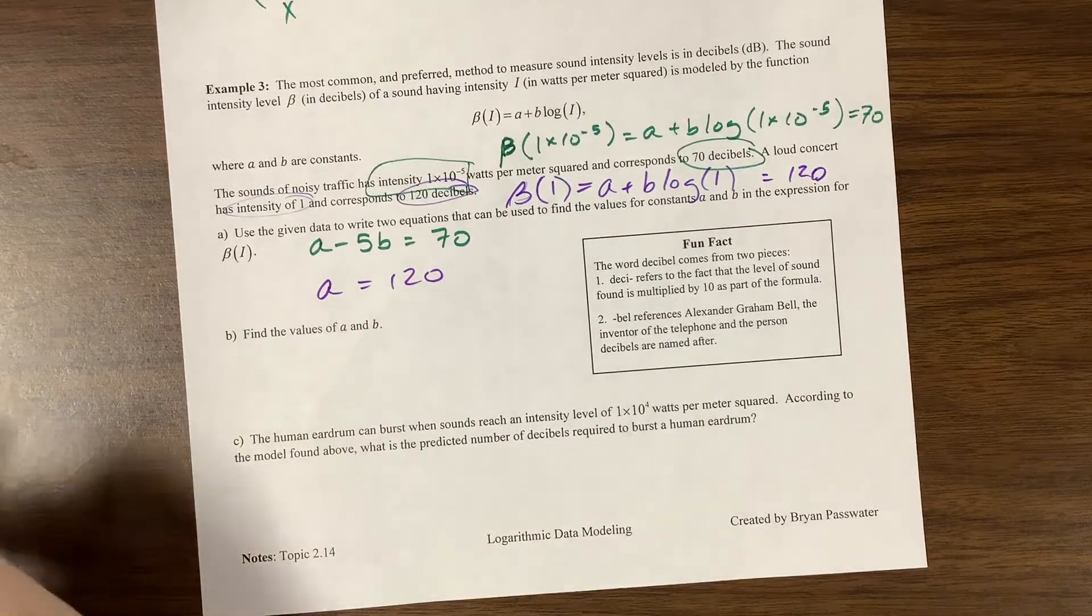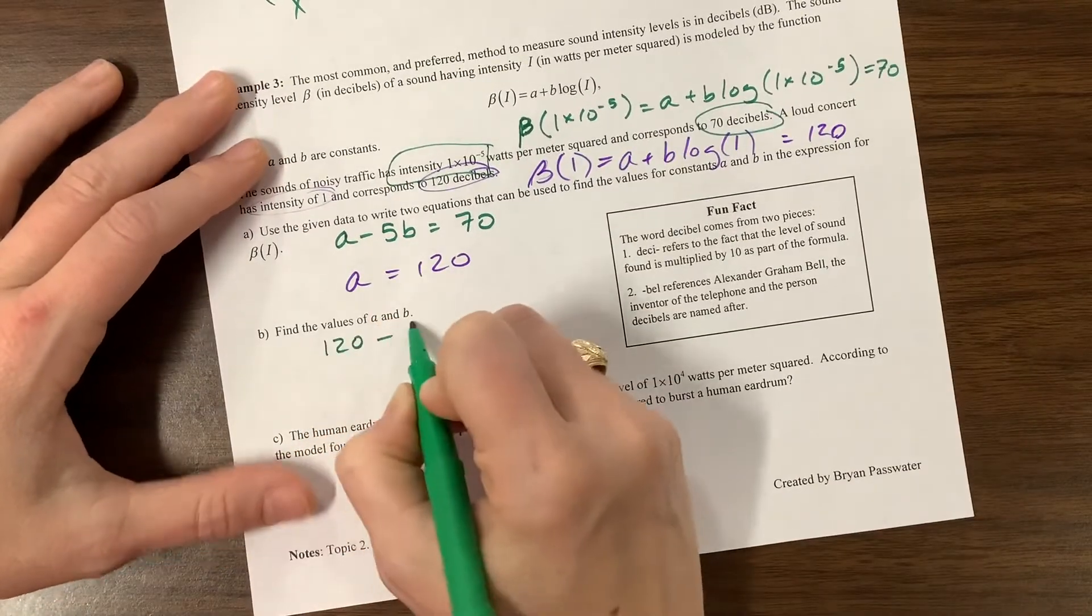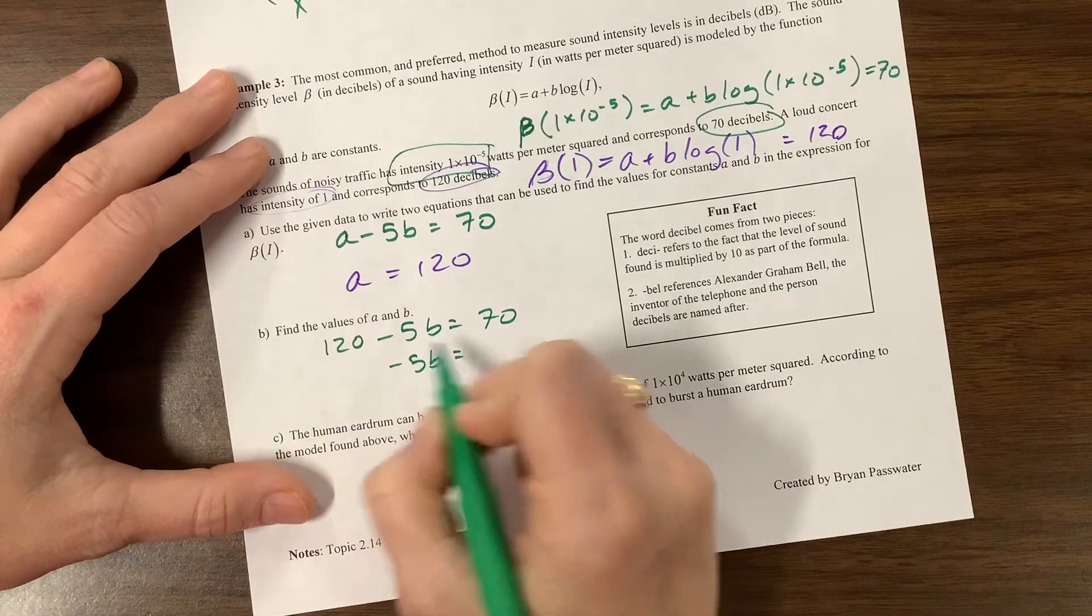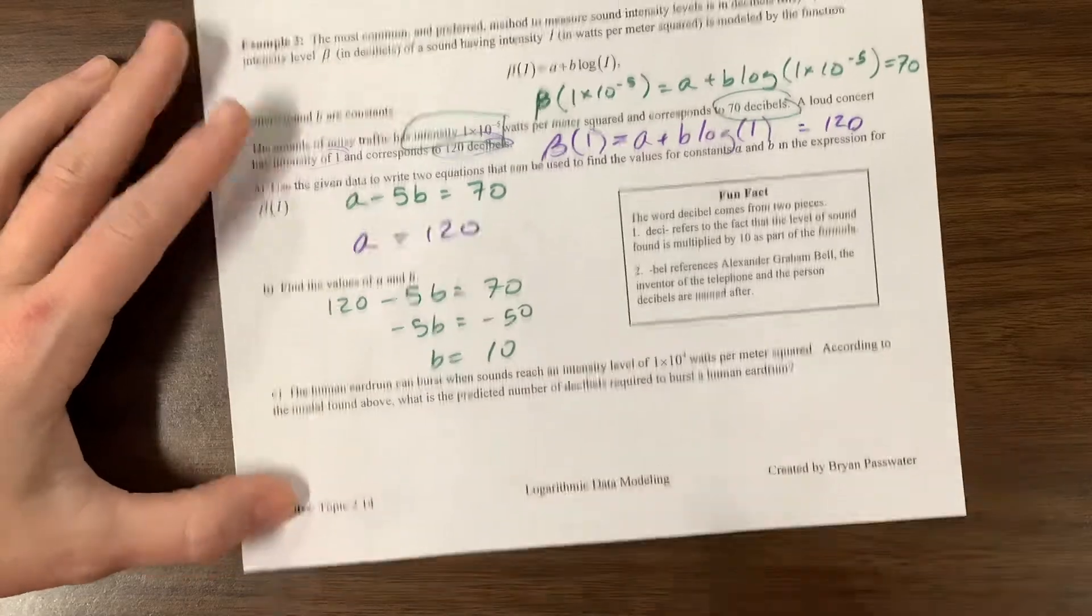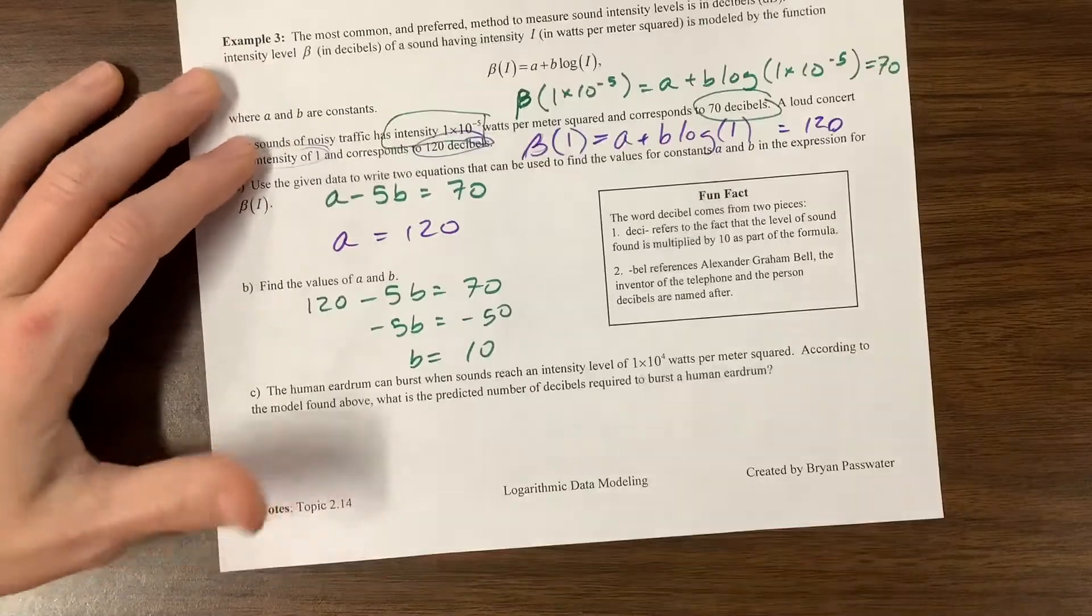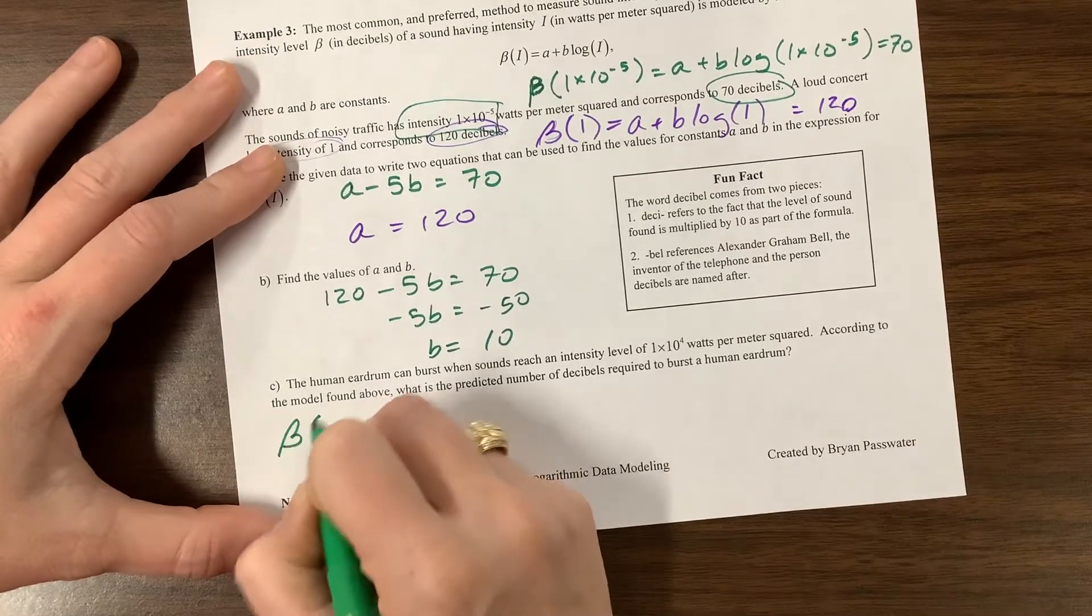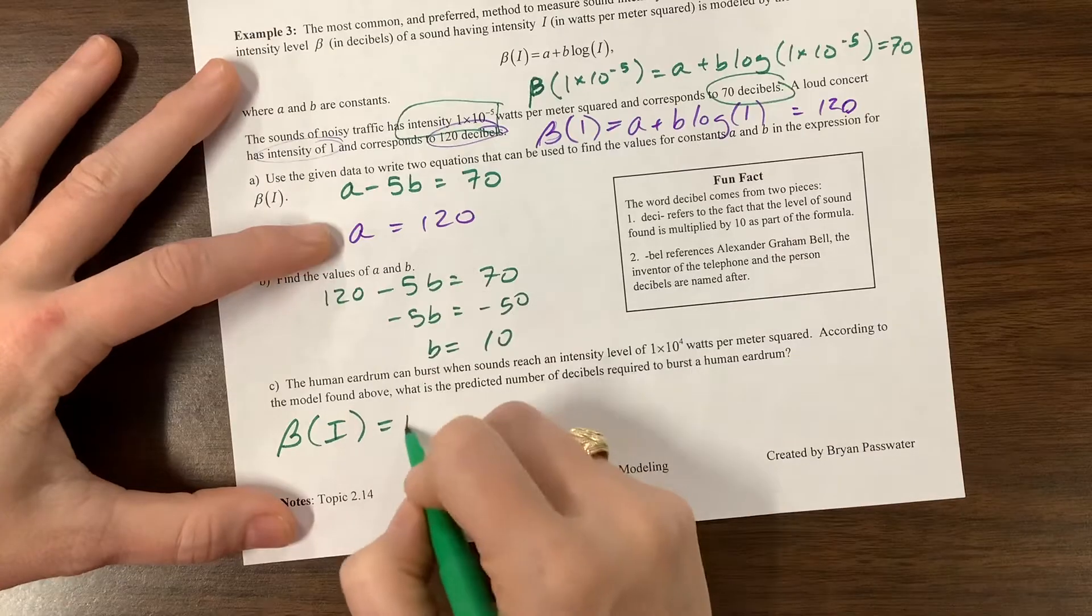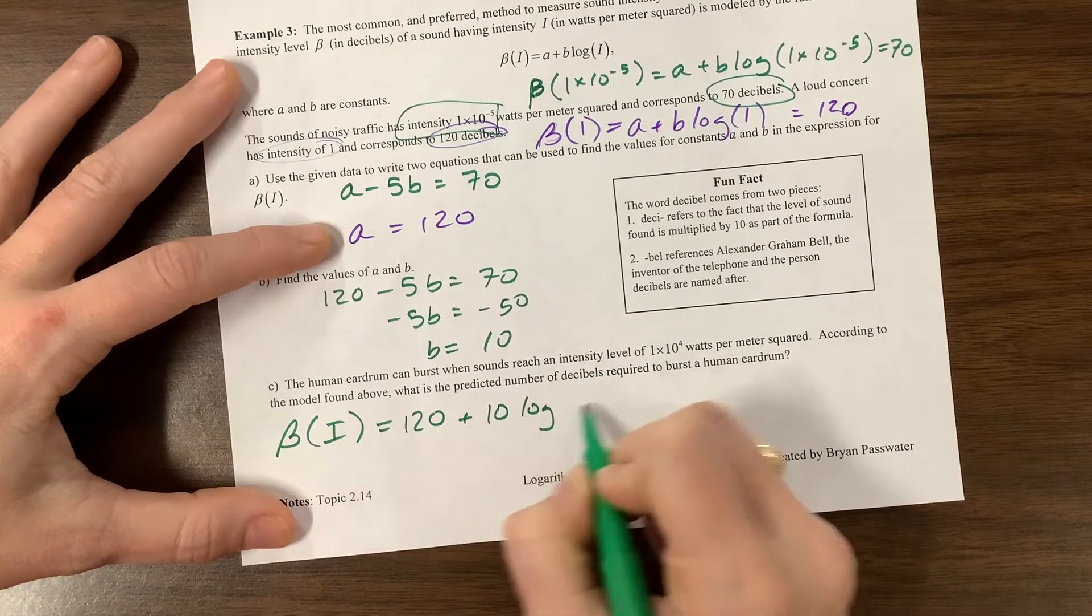So find the values. Well, we found A. I'm going to switch back to a good pen. And then I can just say, okay, 120 minus 5B is equal to 70. Minus 5B is equal to subtract that. What is that? Negative 50. And so B is equal to 10, assuming that I know how to do basic arithmetic. So my equation was this beta of I, I guess is how you say that, is equal to A, 120, plus B was 10 log of I.